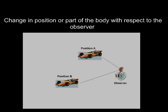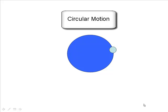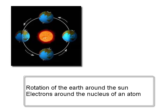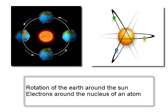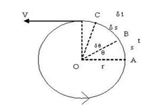Welcome students. Today we will study the first chapter from Paper 1, Circular Motion. In general, motion of a body is change in its position or part of the body with respect to an observer. Circular motion is motion of a body along the circumference of a circle. For example, motion of the earth round the sun or motion of the electrons round the nucleus are the examples of circular motion.